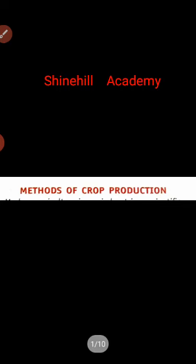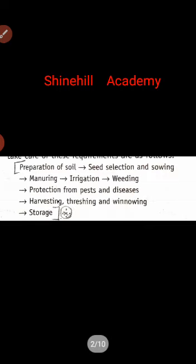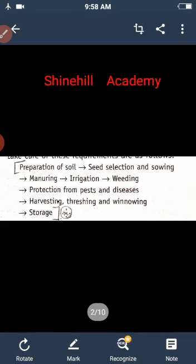The step-by-step method of agriculture is as follows. First step is the preparation of soil. Second is seed selection. Third is sowing. Fourth is manuring. Fifth is irrigation. Sixth is weeding. And then protection from pests and diseases. Seventh is harvesting, threshing, and winnowing. And the last one is storage.